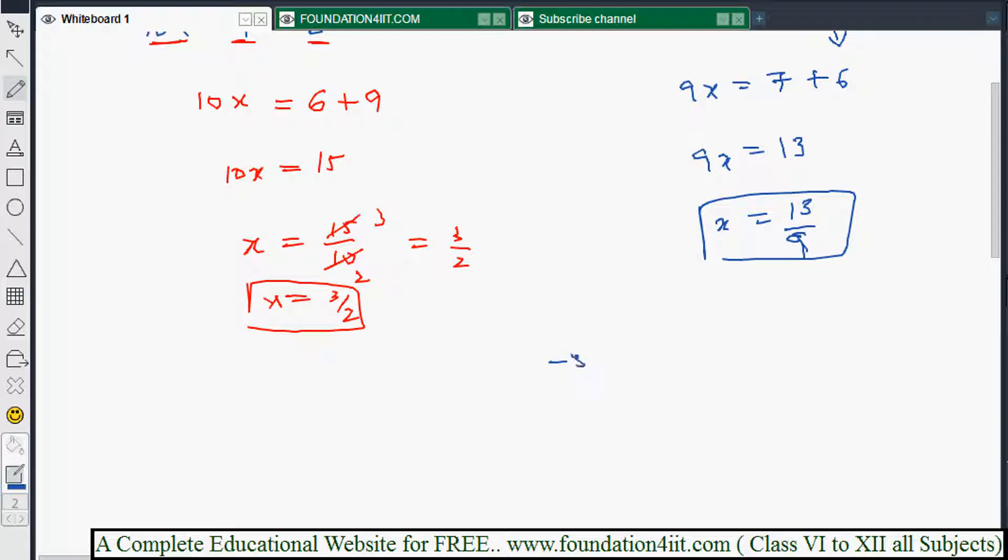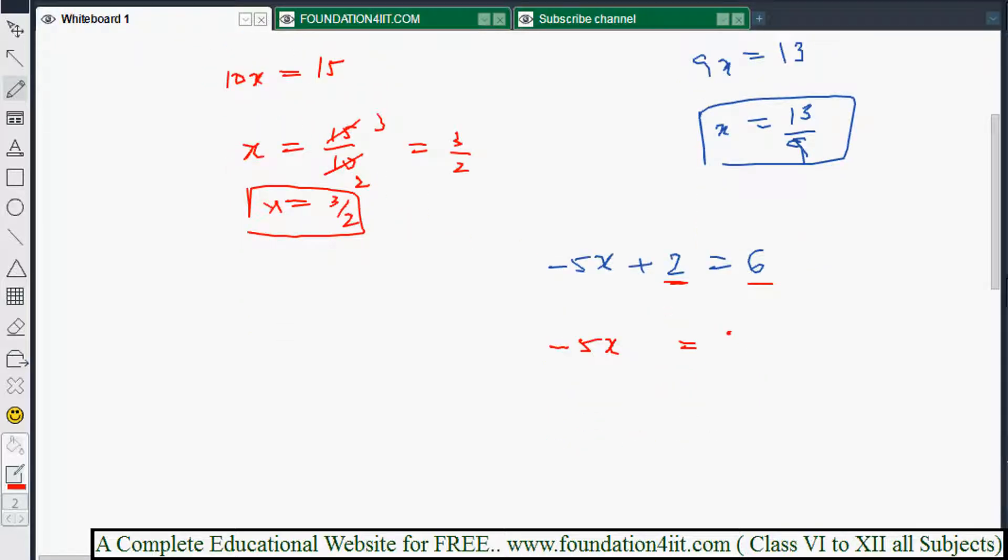Take one more example: minus 5x plus 2 equals 6. First, look at the number of terms - there are only three. Plus 2 and 6 are numerical numbers, so minus 5x equals 6, and plus 2 should go to the right as minus 2.